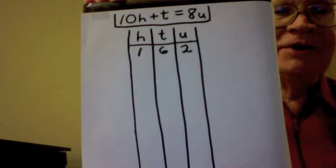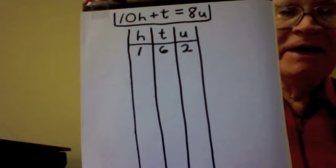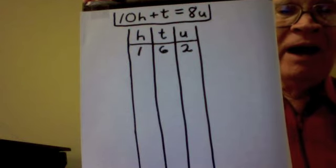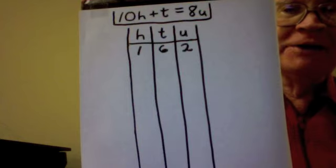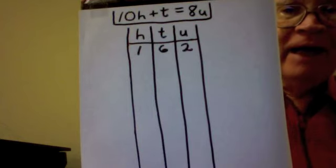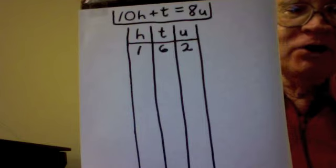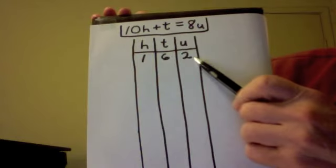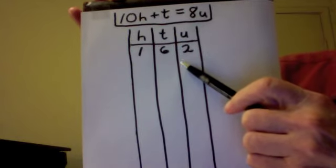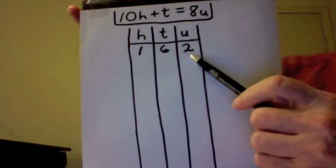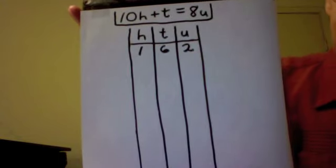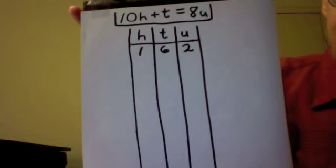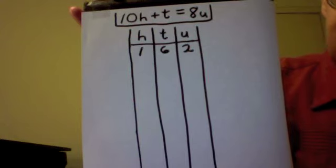So having this equation 10h plus t equals 8u, I'm going to attempt to get some solutions by an htu table. Now u cannot be 0 or 1, that's too small. But u can equal 2, 2 times 8 is 16, 10 times 1 plus 6 is 16.